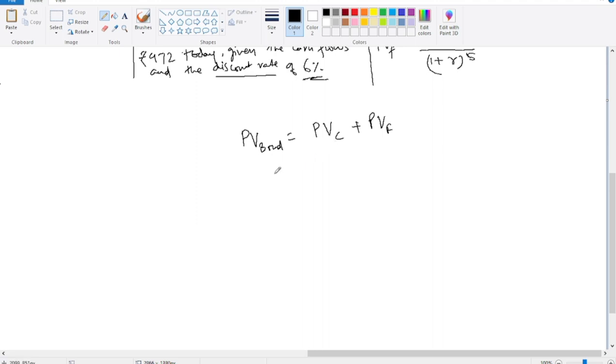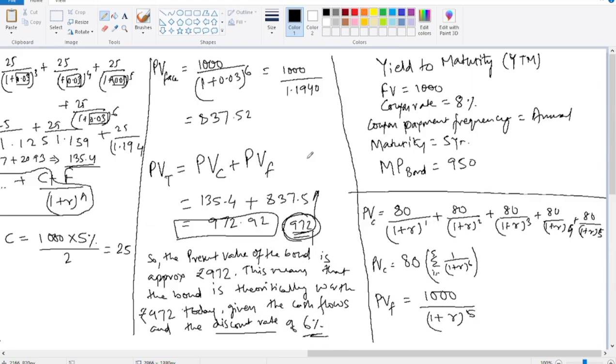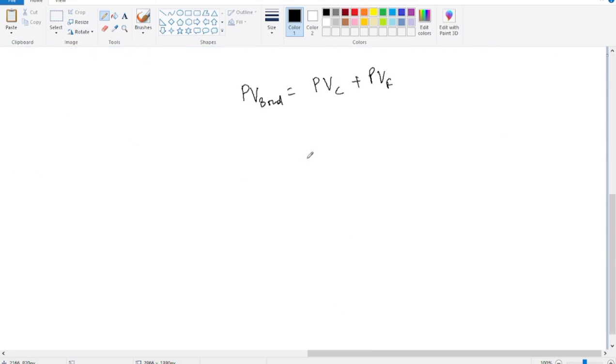So here we have present value of bond, the market value of 950. So this is given 950. This is we have calculated: 80 summation i equals 1 to 5, 1 upon 1 plus r to the power i, plus 1000 upon 1 plus r to the power 5.